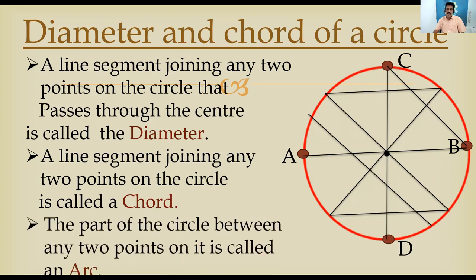Now, the part of a circle between any two points on it is called an arc. For example, take points A and C on the circle — cut these two points and take the boundary between them. That boundary portion is called an arc. The full boundary of the circle is the circle itself; any part of that boundary is called an arc of the circle.